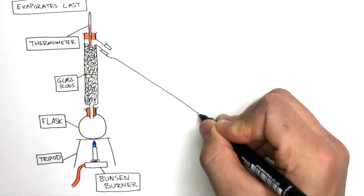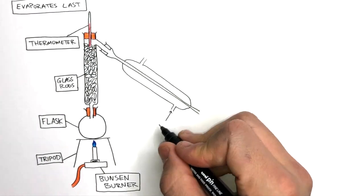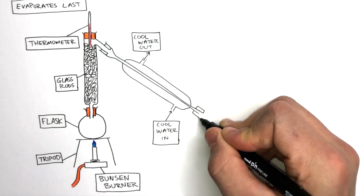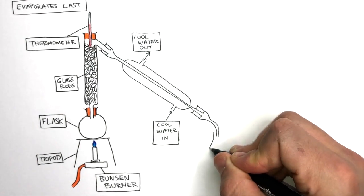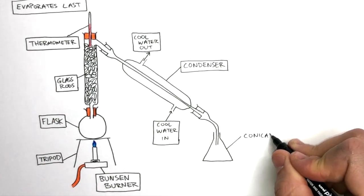The condenser is securely attached to the sidearm of the fractionating column. Cool water flows in from the bottom and out at the top. A delivery tube attached to the condenser flows into the conical flask. This is the condenser, and this is the conical flask.